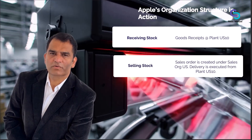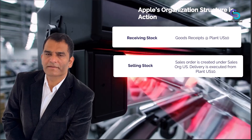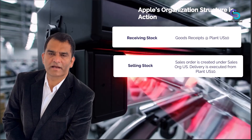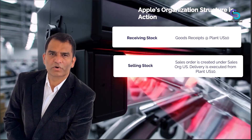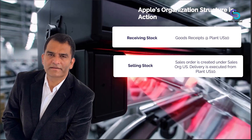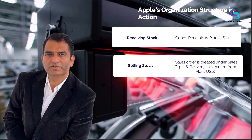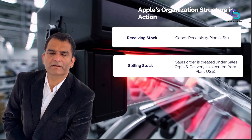Let's now look at the selling stock scenario. A customer in New York orders an iPhone from apple.com. The sales order is created under sales org US with the distribution channel online. The plant that will supply the product is US10, the California warehouse — perhaps Apple ships nationwide from there.